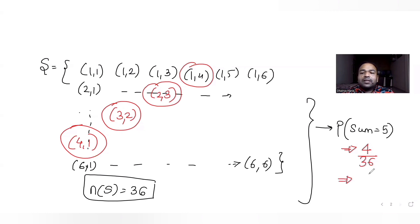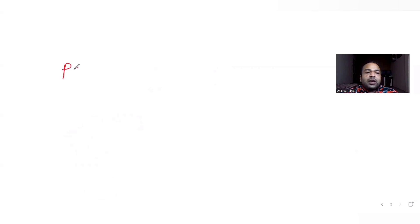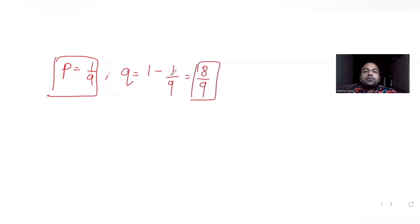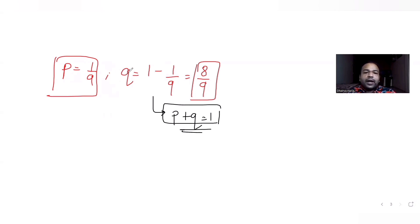So the probability of getting the sum 5 is 4/36, which equals 1/9. Now using the idea of binomial theorem, P = 1/9 is the probability of success. Q, the probability of not getting sum 5, is 1 minus 1/9, which equals 8/9, since P plus Q must always equal 1.